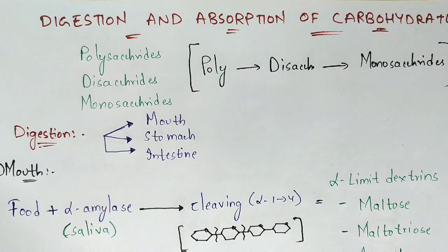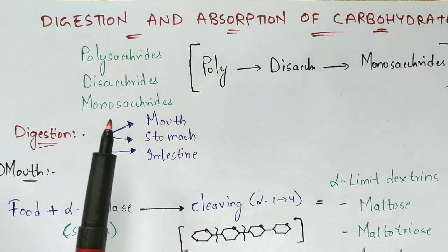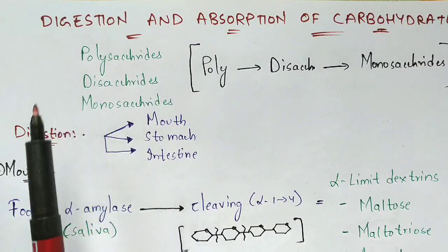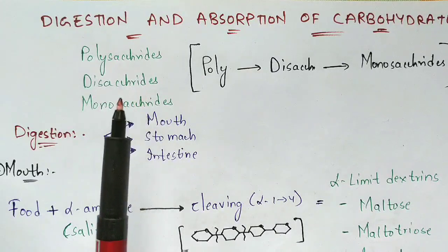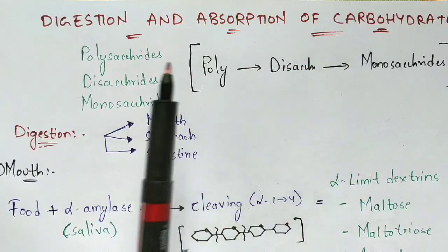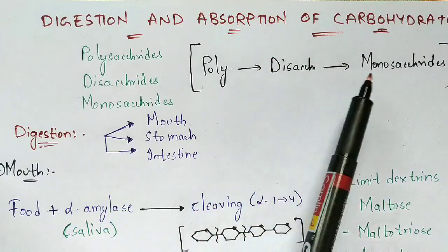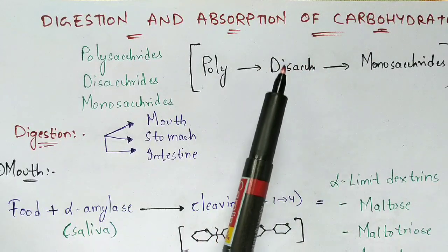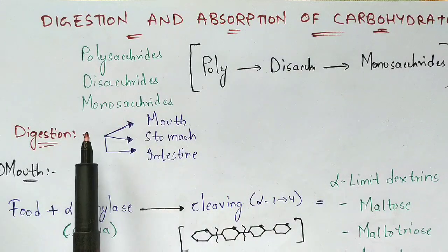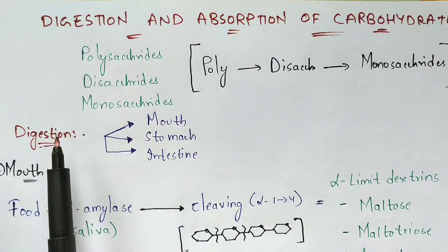In this video, let us discuss about digestion and absorption of carbohydrates. We know the classes of carbohydrates — polysaccharides, disaccharides, and monosaccharides. The actual phenomenon of carbohydrate digestion is the conversion of polysaccharides into monosaccharides. Let us begin with digestion and then learn about the absorption of carbohydrates.